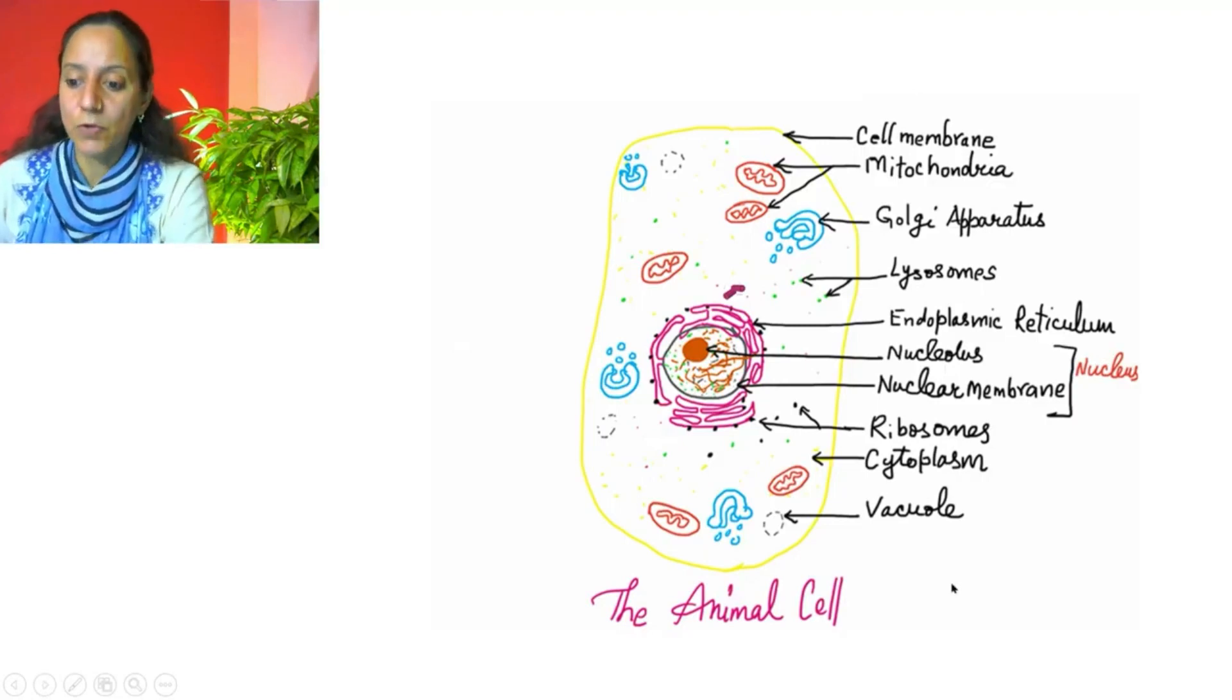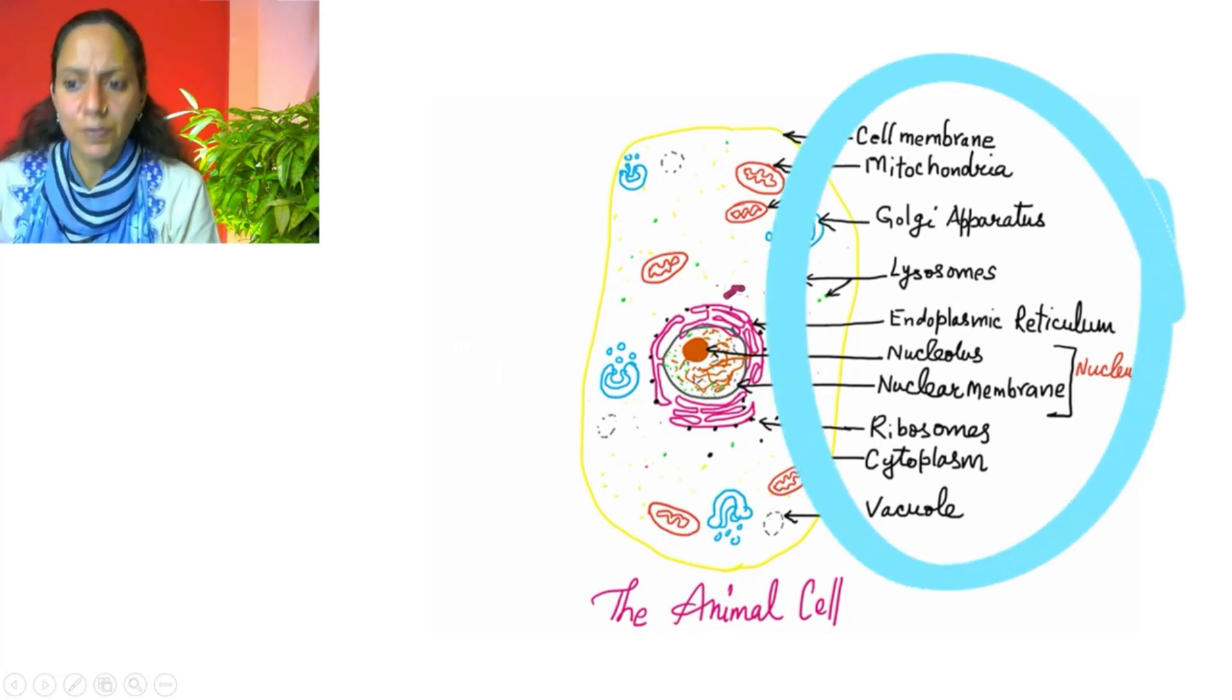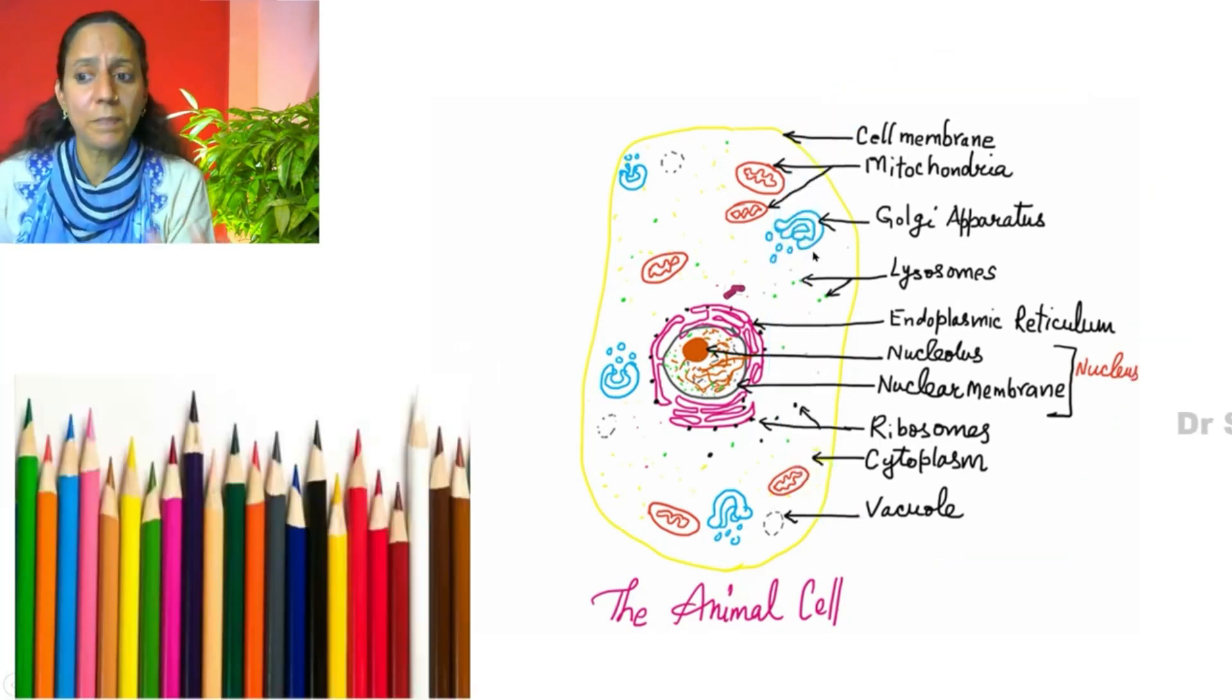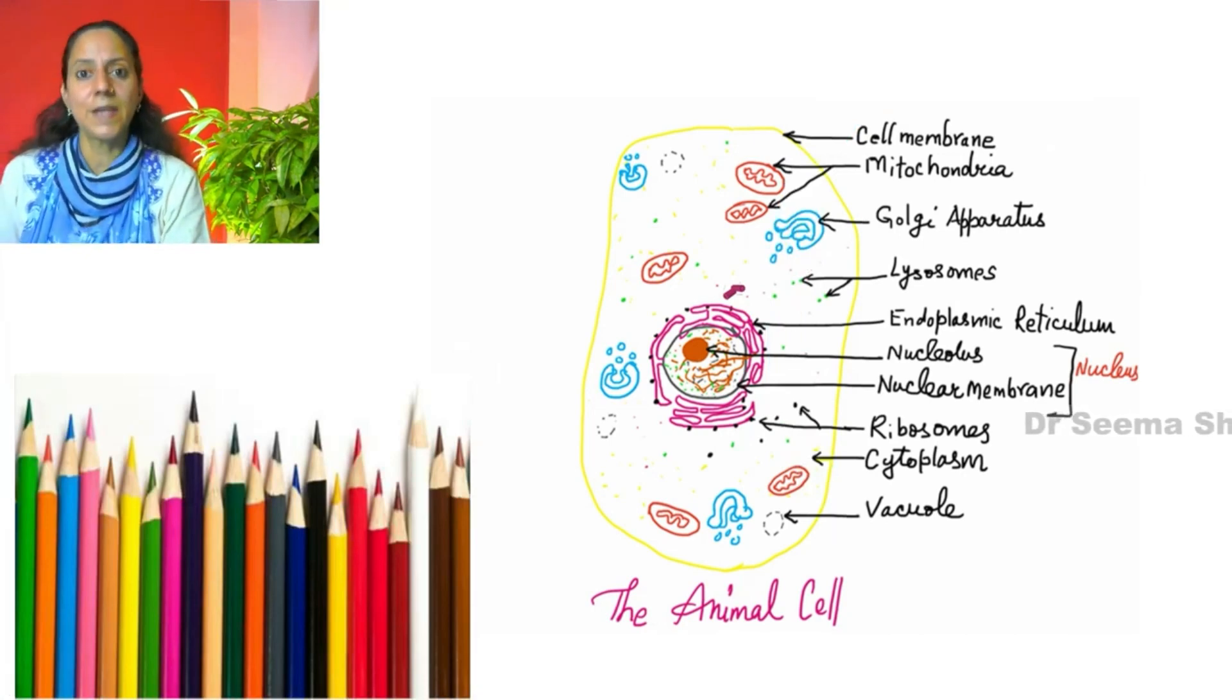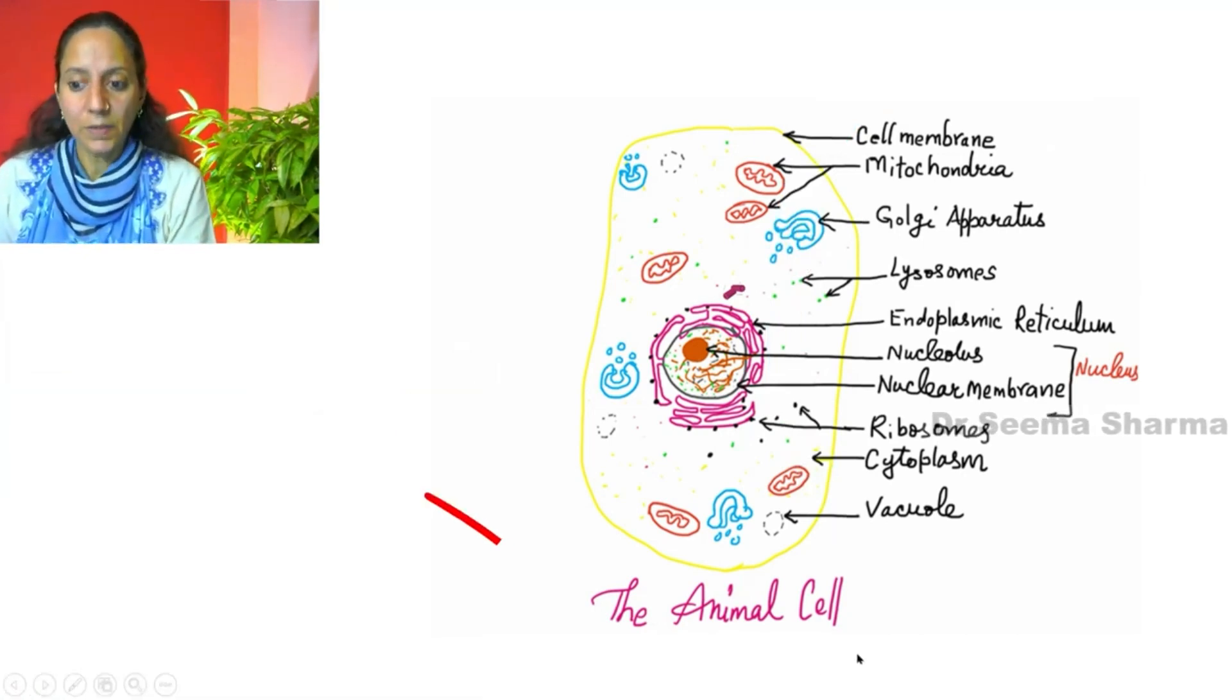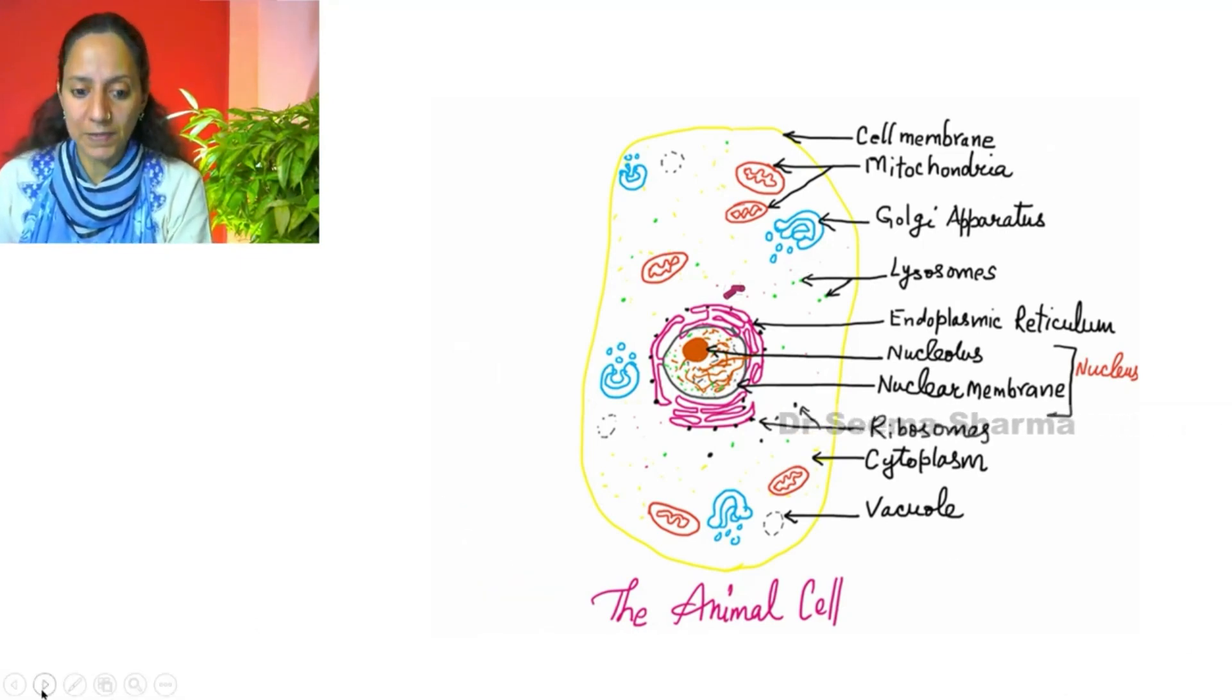Like here I have drawn the animal cell. Maximum of the labeling is towards the right hand side. I have used different colors to depict different cell organelles and different parts of this animal cell, and at the bottom I have written animal cell. So this is how you can draw an animal cell.